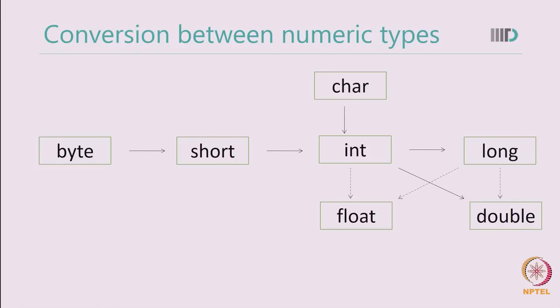Java allows you conversion from one numeric type to another. As you may see that if you are converting from a smaller numeric type to another, bigger numeric type then you may not lose information. But if you are doing the other way round that you may lose information.